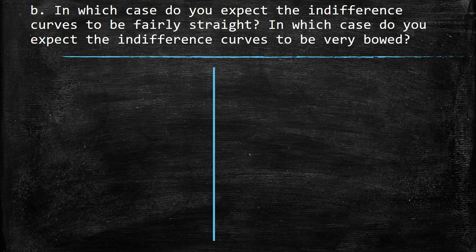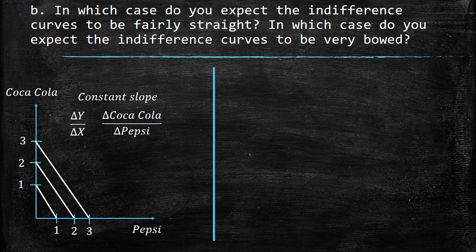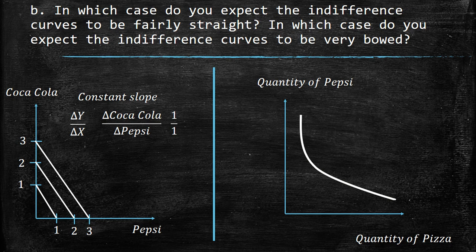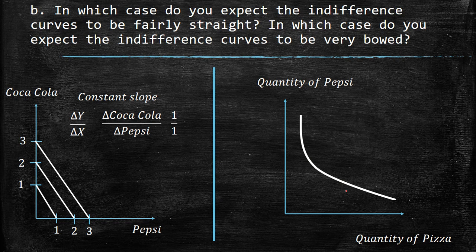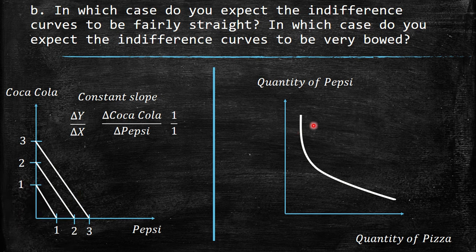In which case do you expect indifference curves to be fairly straight, and in which case very bowed? The Coke/Pepsi case gives very straight curves, as we saw — constant slope. The ski/binding case is very bowed at a right angle. When curves are very bowed, it means when you have a lot of one good you are able to exchange a large quantity of it just for a little bit of the other. For example, if you have lots of pizza you'd trade a lot for a little Pepsi, and vice versa. The extreme cases are perfect complements requiring one-to-one consumption, while very bowed curves indicate a preference for middle combinations.